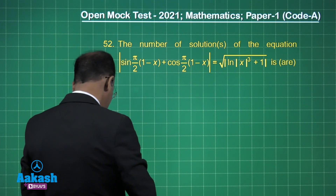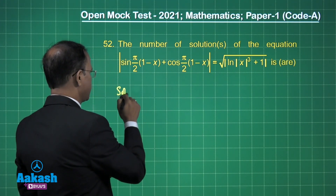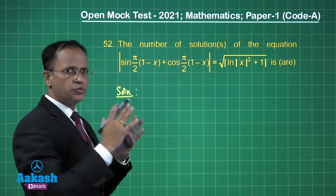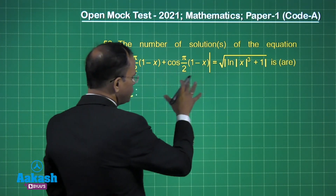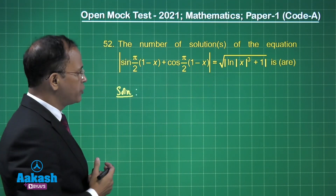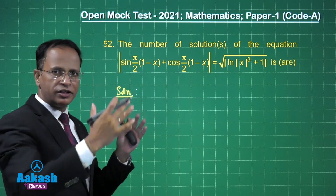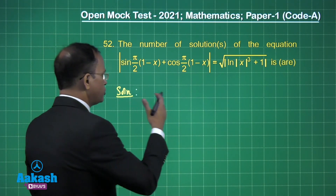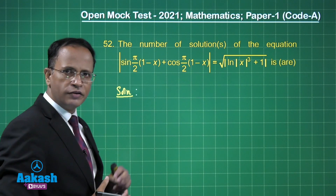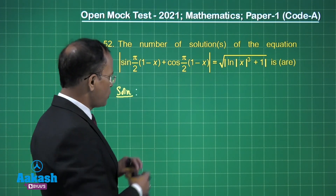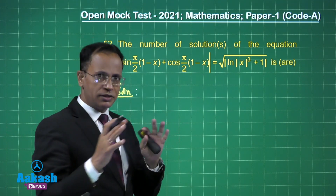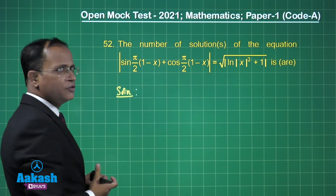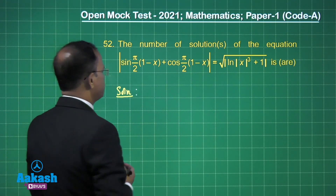We have been given sin(π/2 · (1−x)). We have two different types of functions. Whenever we have such equations with two different natures of functions, we need to use the concept of graphs — we draw the graphs and find the number of points of intersection. You can draw the graph and find the intersection points here.